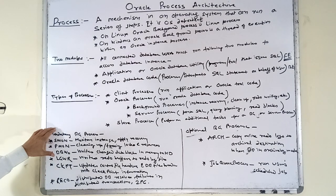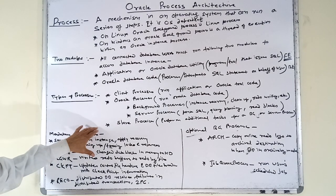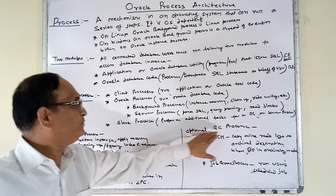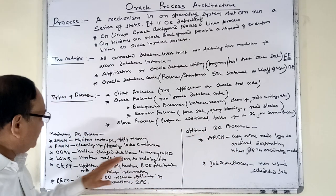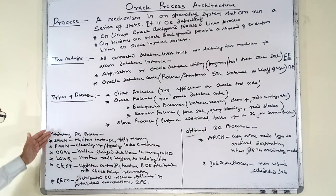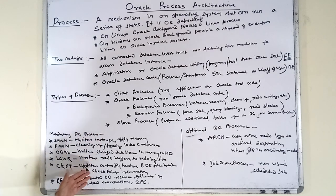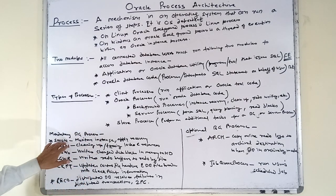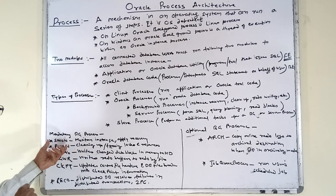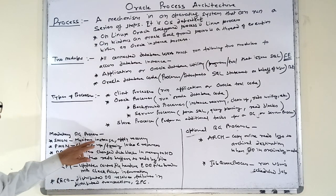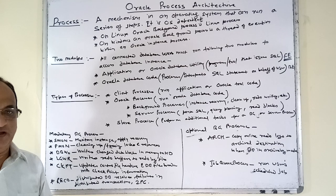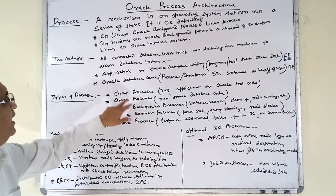Processes are divided into two broad categories: mandatory background processes and optional background processes. The first mandatory background process is SMON — System Monitor. It monitors the instance and applies instance recovery as needed.